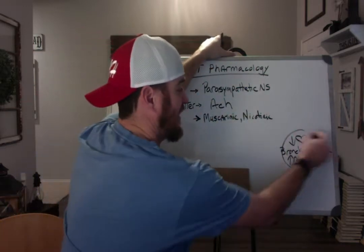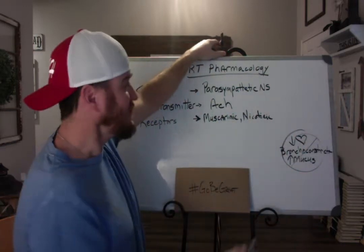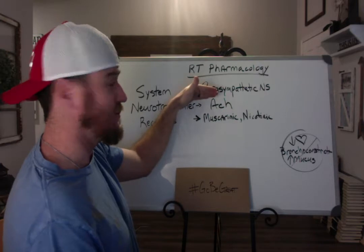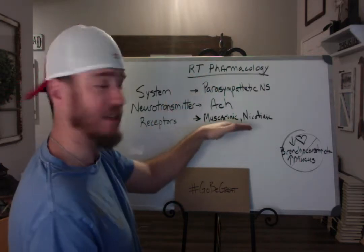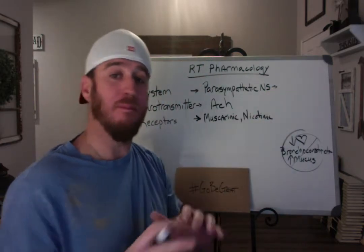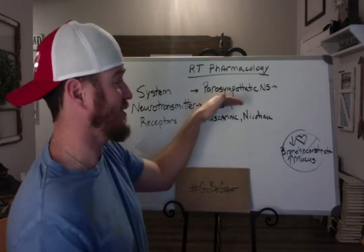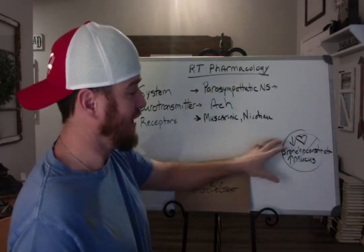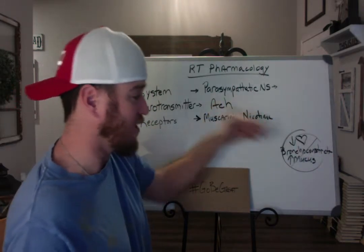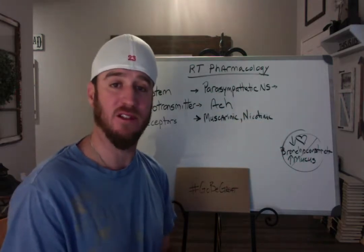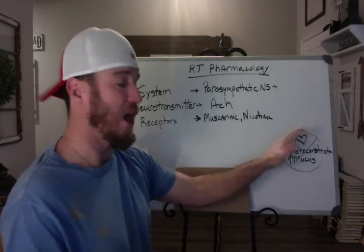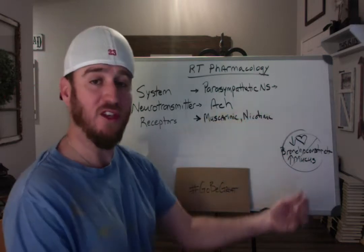It sounds like these are things we would want to block, which brings us to our terminology. We've identified the parasympathetic nervous system, acetylcholine, and our muscarinic and nicotinic receptors. When we talk about blocking a system — not mimicking it — if you give a drug that mimics the parasympathetic nervous system, you'll get a decrease in heart function, bronchoconstriction, and increased mucus. We don't ever want that as RTs. We want an effective heart, bronchodilation, and decreased mucus. So we want to block these effects, and the word we use is lytic — the suffix lytic means to block.